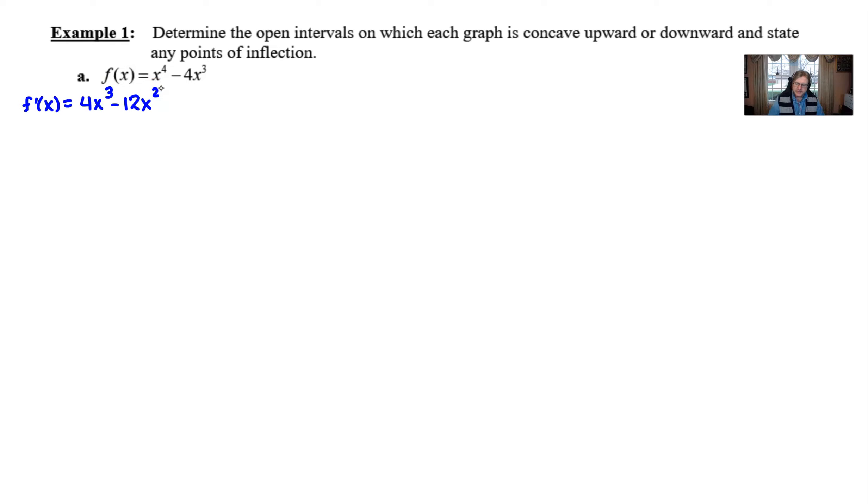Now because we're dealing with the test for concavity, that means that we are going to bypass this first derivative. Think about driving your car through a little town. We're not going to stop for gas. We're not going to stop for a slurpee, a big gulp, or anything like that. We're just going to move right through that town to get to our other destination, which happens to be second derivativeville. We want to take the second derivative. And so when we do that, 12x squared minus 24x is what we're going to get.